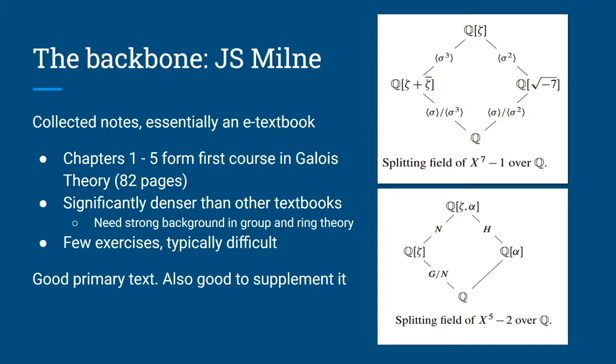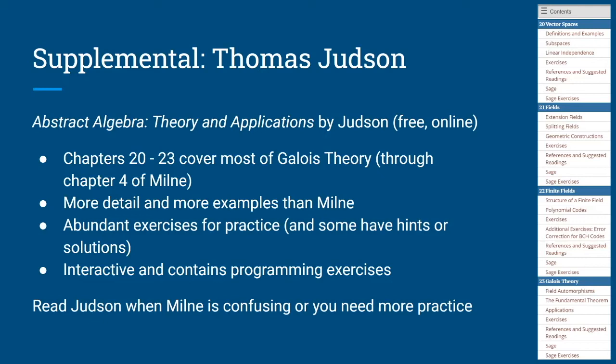One of those sources is Thomas Judson's free online textbook on abstract algebra. Chapters 20 through 23 cover most of Galois theory, which corresponds to chapters one through four of Milne. Only chapter five of Milne has content not covered in Judson. What is great about Judson is that he has much more detail, many more examples, and far more practice exercises. As you're reading through Milne, it's a good idea to read simultaneously through Judson — you'll find it elaborates on what you've already learned.